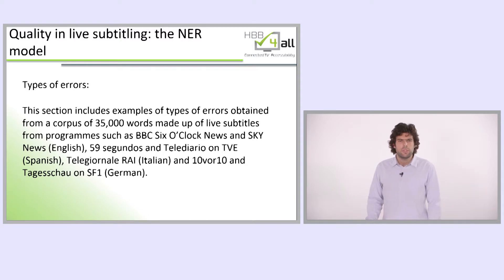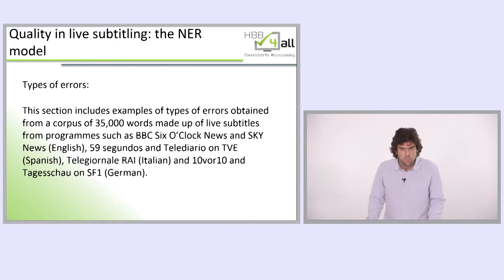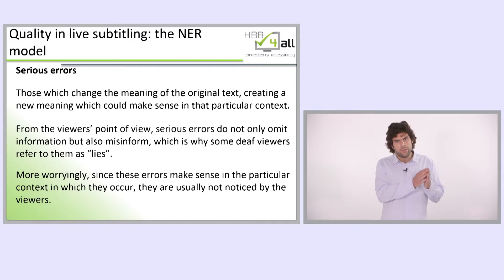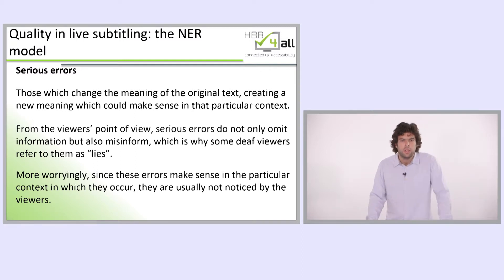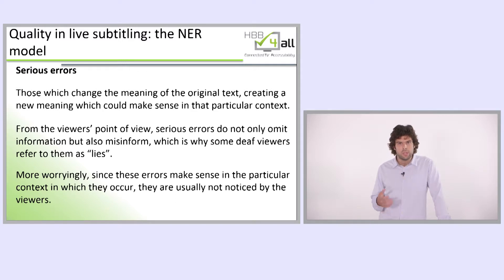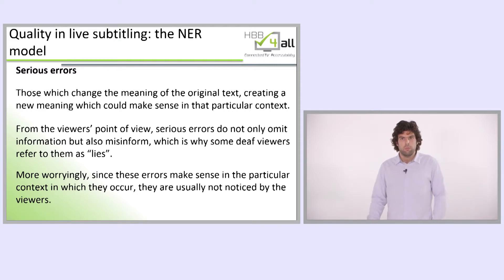This section of the presentation includes different types of errors obtained from a corpus of 35,000 words made up of live subtitles from different programs. Serious errors are those which change the meaning of the original text. Both addition errors and recognition errors can be serious, standard, or minor. Serious errors change the meaning of the original text, creating a new meaning which could make sense in the particular context. From the viewer's point of view, serious errors do not only omit information, but also misinform — which is why some deaf viewers refer to them as lies. These errors make sense in context and are usually not noticed by the viewers.